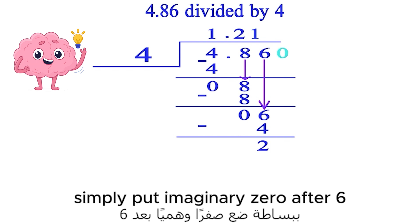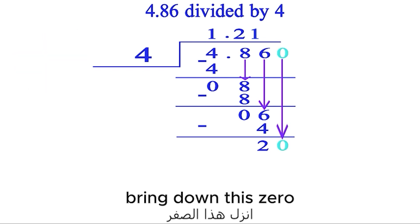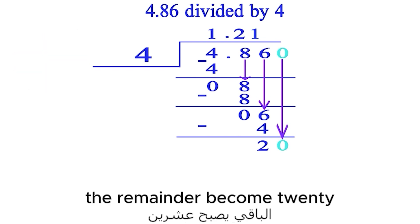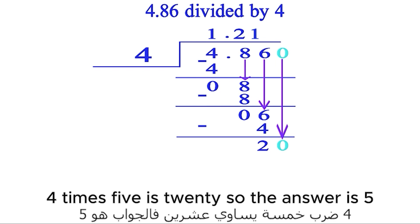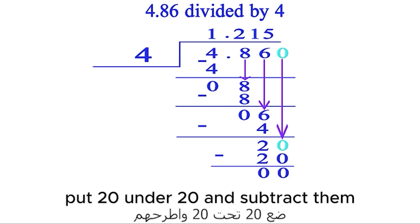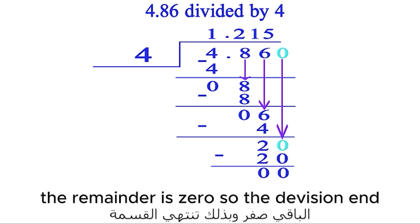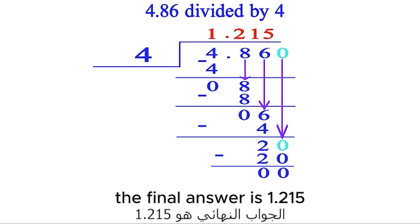Simply put imaginary 0 after 6. Bring down this 0. The remainder becomes 20. It is greater than the divisor, so solve normally. 4 times 5 is 20, so the answer is 5. Put 20 under 20 and subtract them. The remainder is 0, so the division ends. The final answer is 1.215.